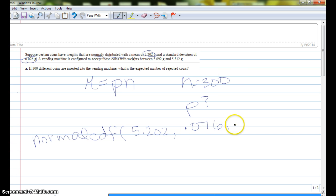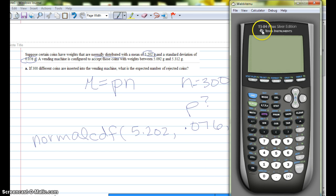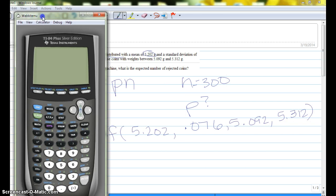The starting point, we want them between 5.092, and then our ending point, 5.312. Okay, so let me bring up the calculator. Let me move this so we can see that.